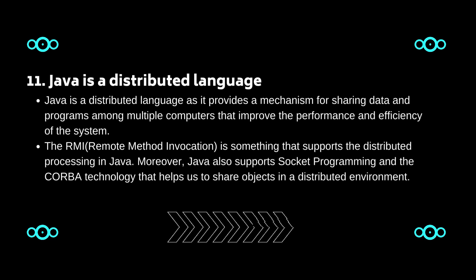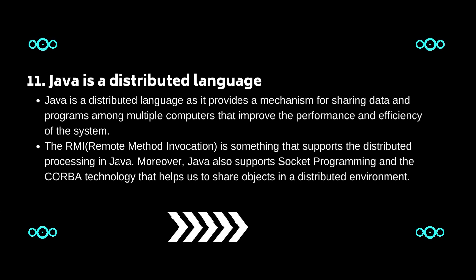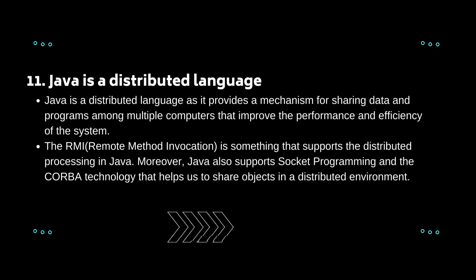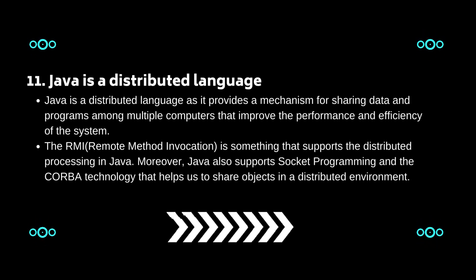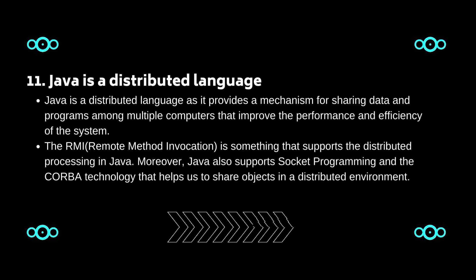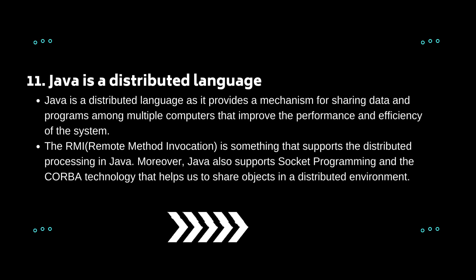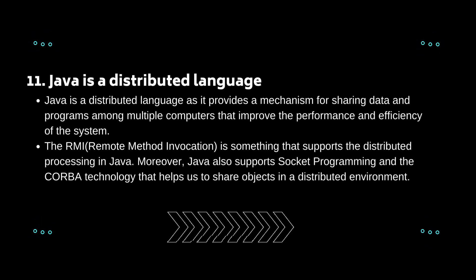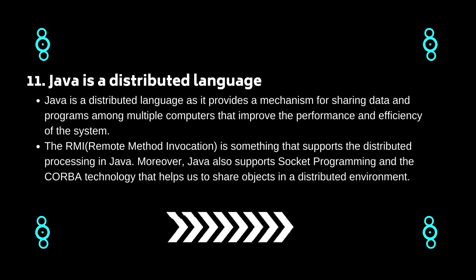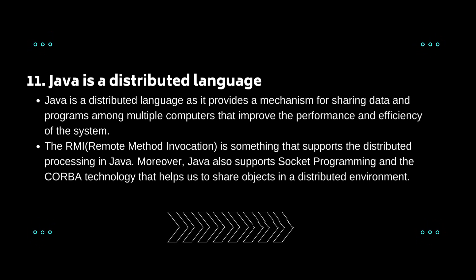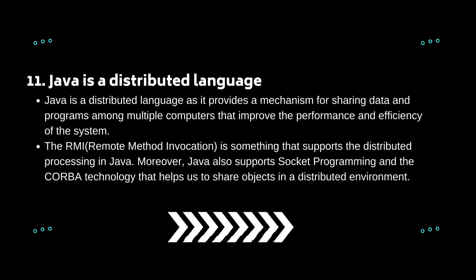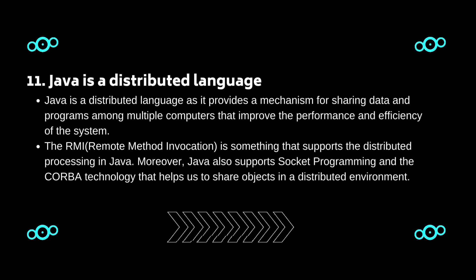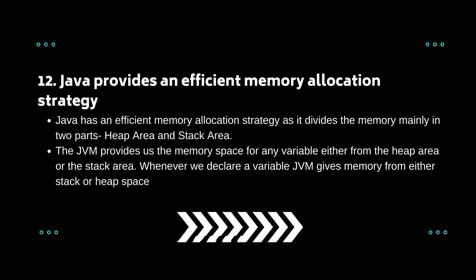Eleven: Java is a distributed language. Java is distributed as it provides a mechanism for sharing data and programs among multiple computers, improving system performance and efficiency. RMI (Remote Method Invocation) supports distributed processing in Java. Moreover, Java also supports socket programming and CORBA technology, which helps share objects in a distributed environment.